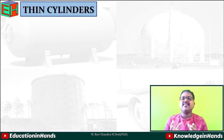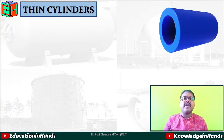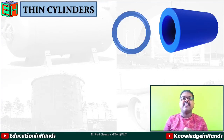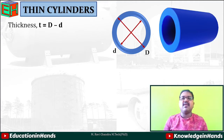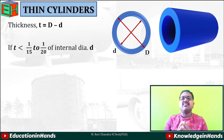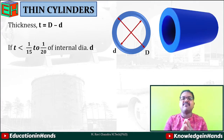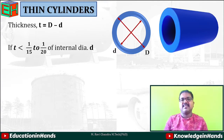First, if we see what a thin cylinder means, we are considering a hollow cylinder like this. If we take the cross section of this cylinder, it has an external diameter capital D and internal diameter small d. So the thickness of this cylinder will be equal to T = (D - d)/2. Based on this, how we define a thin cylinder: if the thickness of the cylinder is less than 1/15 to 1/20 of the internal diameter small d, then the cylinder is classified as a thin cylinder. Otherwise, it is classified as a thick cylinder, which is another topic.